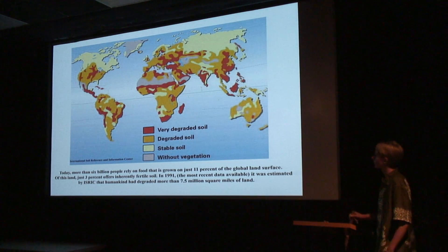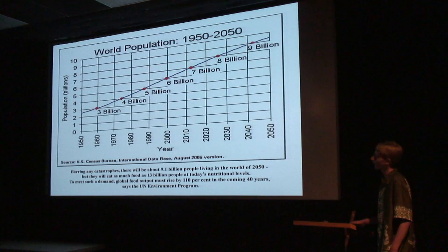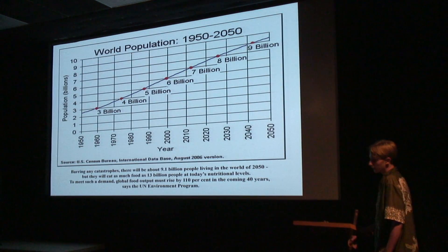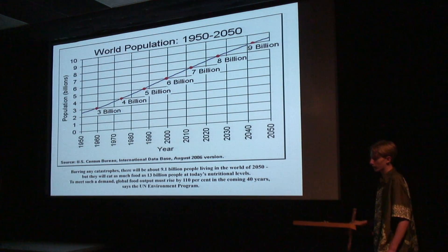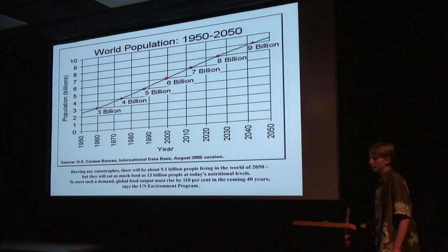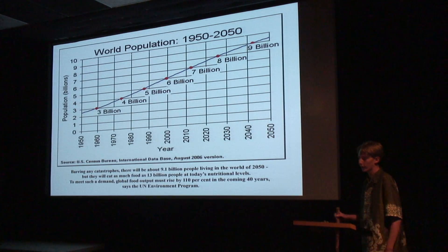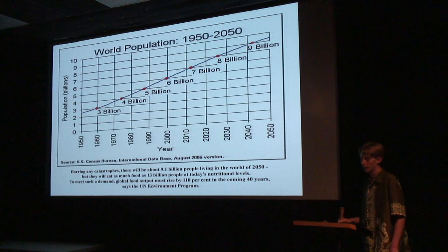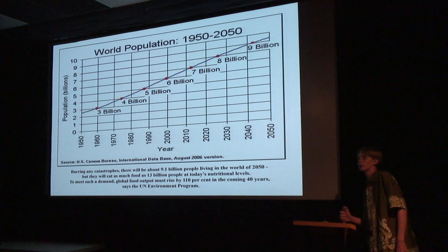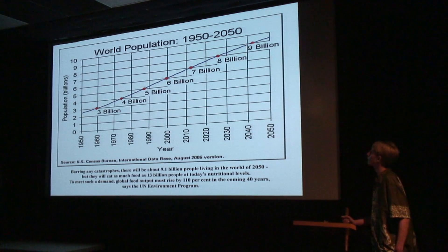Nearly one-third of the world's cropland has been abandoned during the past 40 years because erosion has made it unproductive. In 2008, the U.S. Census Bureau estimated that by the year 2050, more than 9 billion people will inhabit the earth, and to feed this many people, agricultural yields must double.